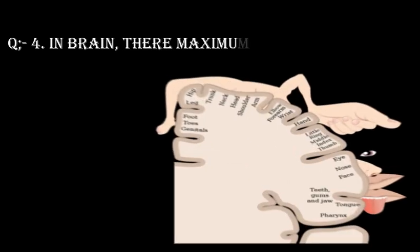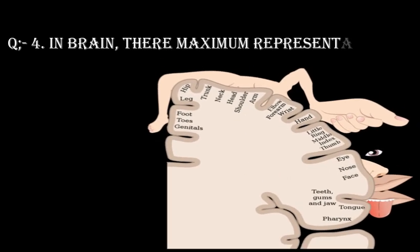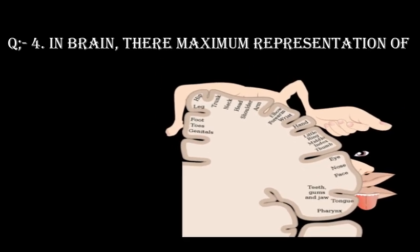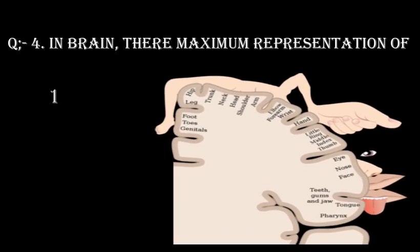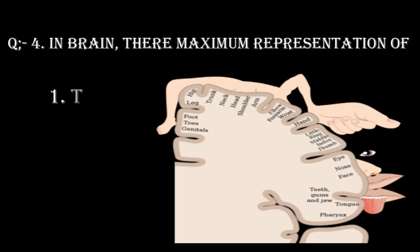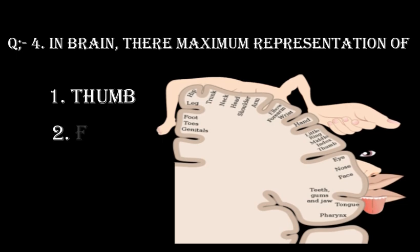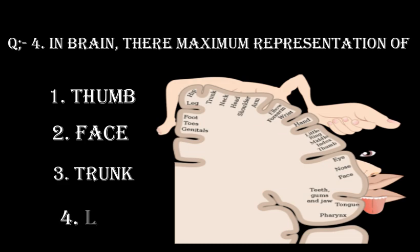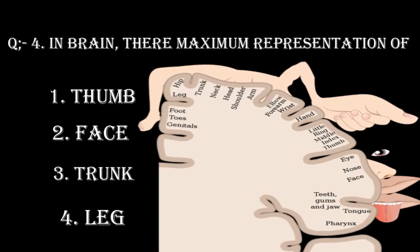Question number 4. In the brain, there is maximum representation of. Option 1: Thumb. Option 2: Face. Option 3: Trunk. Option 4: Leg.